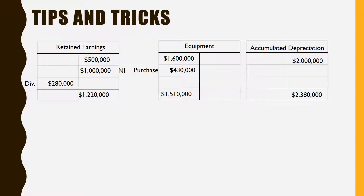Looking at the statement of cash flows on the prior slide, you'll see dividends of $280,000 and net income of $1,000,000. The other place you'll often have to solve is with equipment or other fixed assets. Say the beginning balance was $1,600,000, the ending balance was $1,510,000, and the problem tells us we purchased $430,000 worth of equipment. That clearly doesn't balance, so we must have a credit of $520,000 — meaning we probably sold some equipment, but we likely didn't sell it for $520,000; that's just the original cost of what was sold.